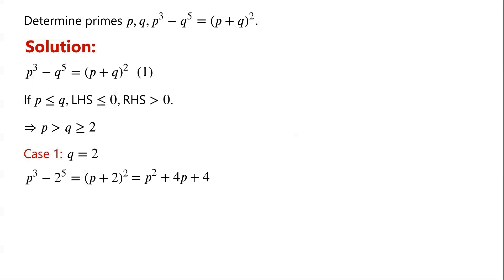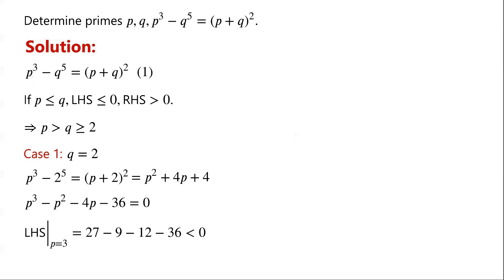Rearranging and simplifying the equation, we have p cubed minus p squared minus 4p minus 36 equals 0. This is a cubic equation. We can prove that it has no prime solutions. When p equals 3, the left-hand side equals 27 minus 9 minus 12 minus 36, which is clearly less than 0. So p cannot equal 3.